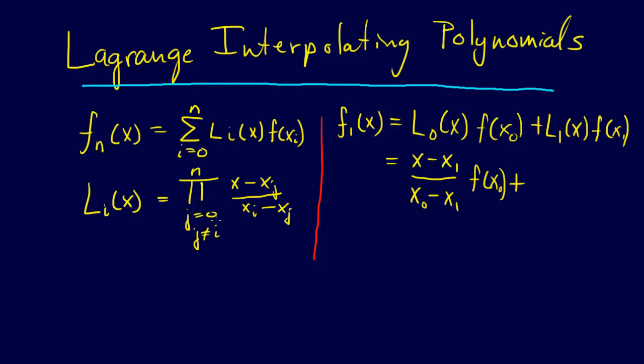So x minus x0 divided by xi, so that's going to be x1 minus xj, and j is 0, so x0. And that will be multiplied by f of x1. So there's our first order Lagrange interpolating polynomial.